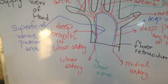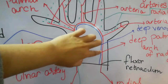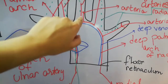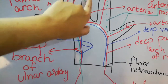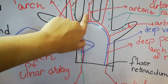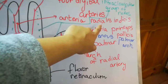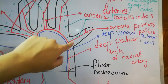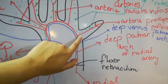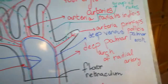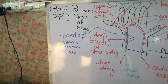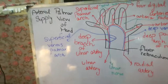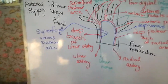One additional point about the radial artery: the branch supplying the lateral side of the index finger is called the arteria radialis indicis, and the branch supplying the medial and lateral sides of the thumb is called the arteria principalis pollicis. That covers the arterial, venous, and lymphatic supply of the palmar view of the hand.